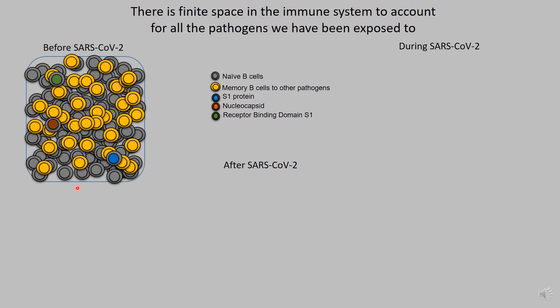You also have memory to many other pathogens from vaccination. All of us have been vaccinated as children — for measles, mumps, and rubella — so there is a small frequency of memory B cells to those vaccines and to viral pathogens like the common cold, influenza, and rhinoviruses. Before a SARS coronavirus infection, a hypothetical profile of your B cell repertoire would be predominantly naive B cells, a very small portion specific to SARS-CoV-2, and roughly 25% memory B cells to other pathogens or vaccines. Every individual will have a different profile based on their immune history.